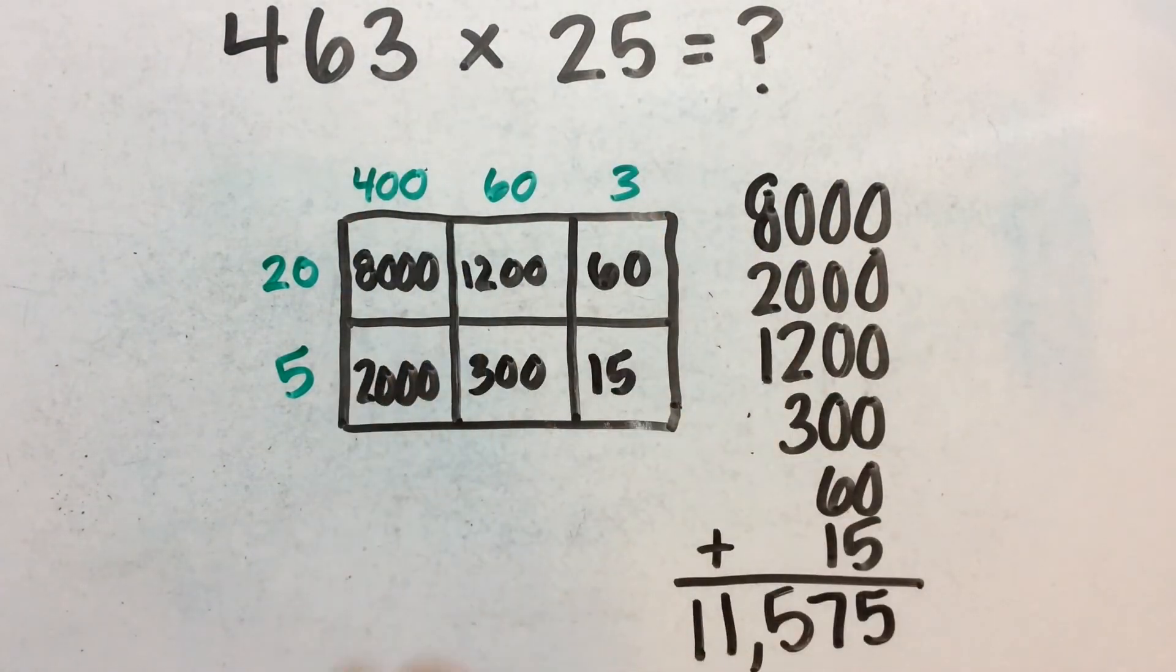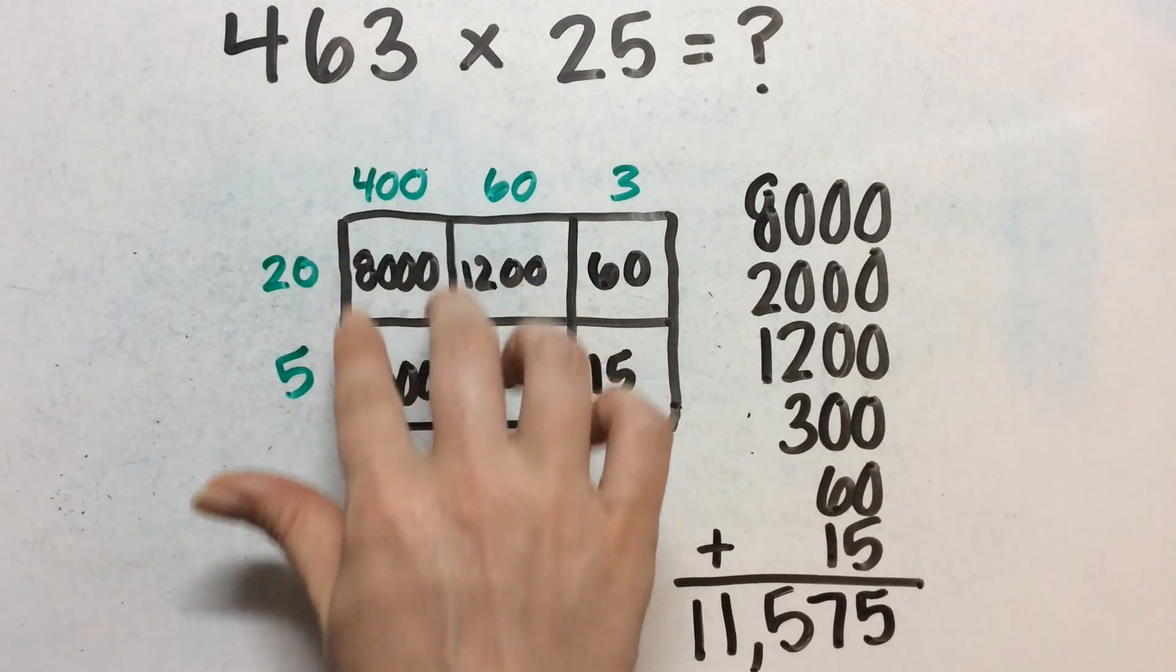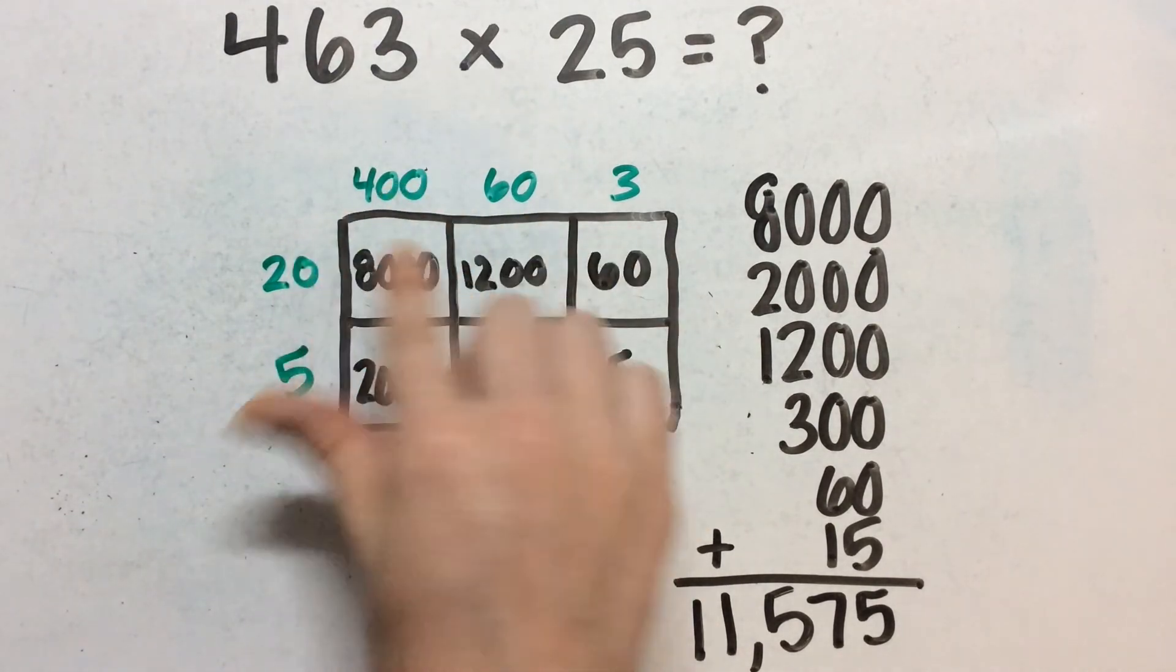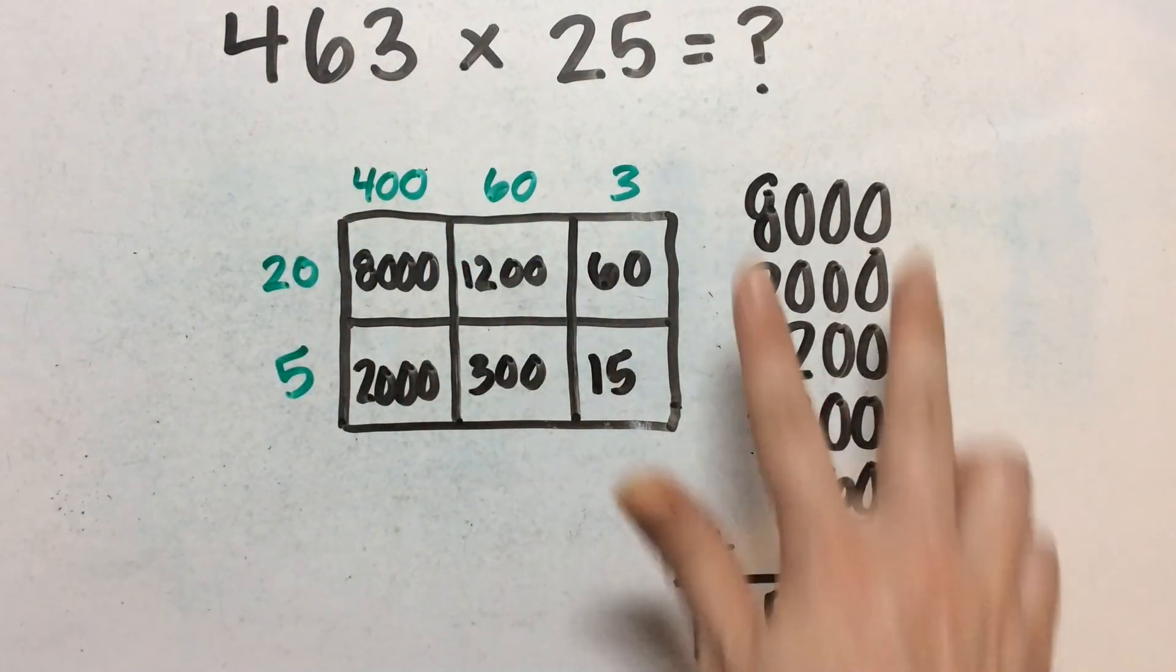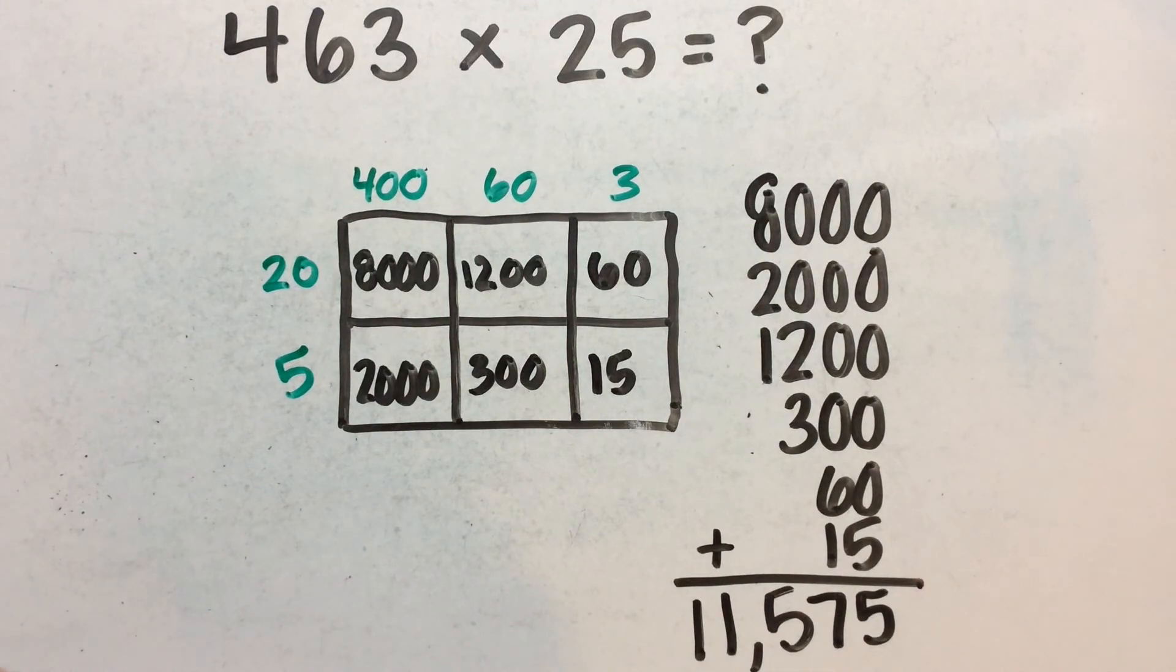So this is called the area model because you're taking these little boxes, multiplying them, finding the area, and then adding all of those partial products together.